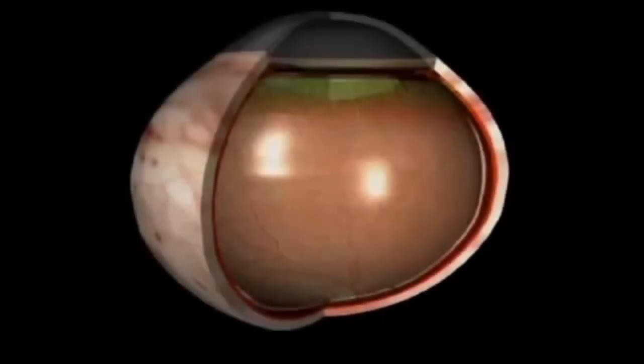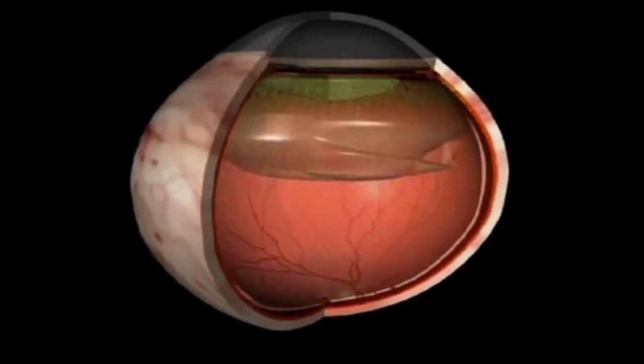In cases of retinal detachment, the vitreous, which is the jelly inside the eye, suddenly shrinks. Sometimes, this can tear away the retina from its underlying position. This is called a retinal tear.